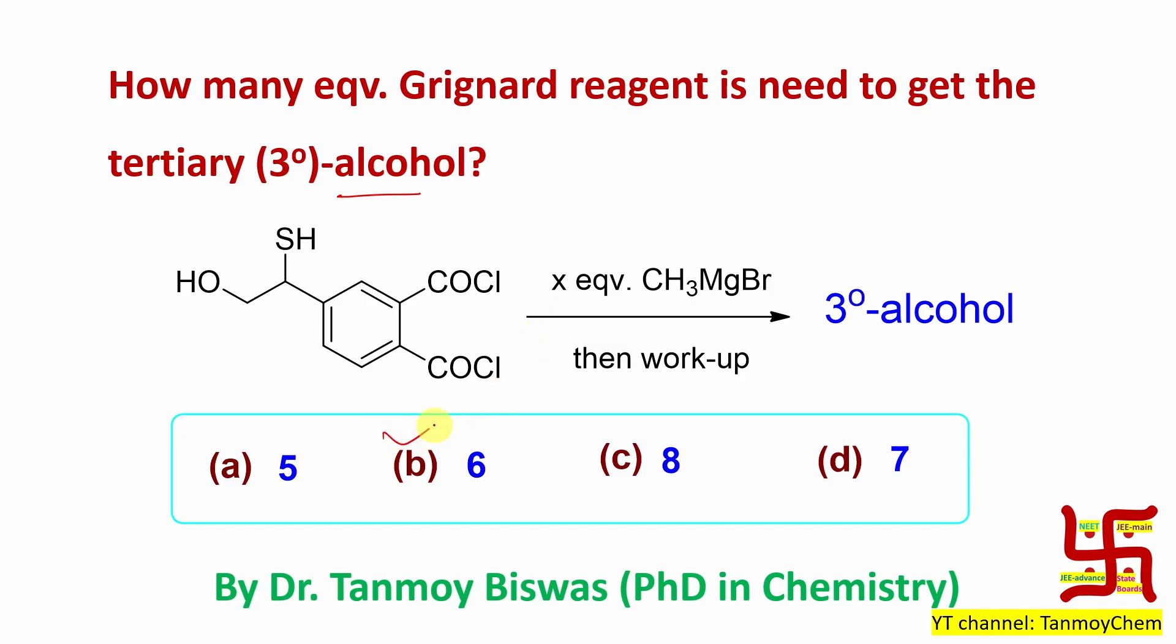Now if this question appears in your exam, in less than 30 seconds how can you solve? You need to remember some kind of chemical reaction. For example, acid chloride reacts with Grignard reagent and produces tertiary alcohol through intermediate, which is actually a ketone. So in this context one molecule of acid chloride consumes 2 equivalents of Grignard reagent to produce the corresponding tertiary alcohol. Since here 2 acid chlorides are given, so 2 plus 2 is 4 equivalents. There are 2 polar groups OH and SH, so another 2 equivalents.